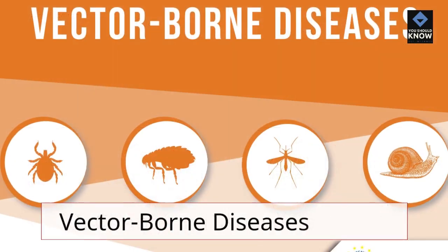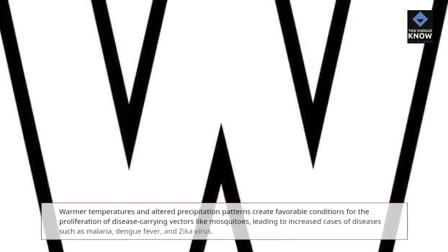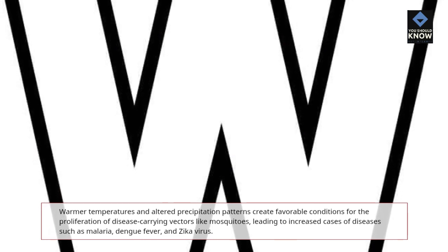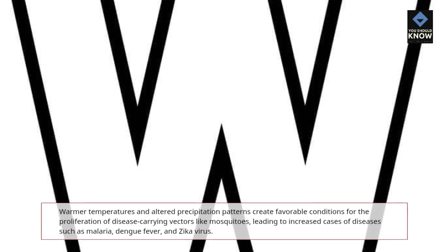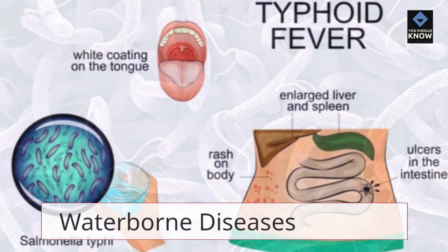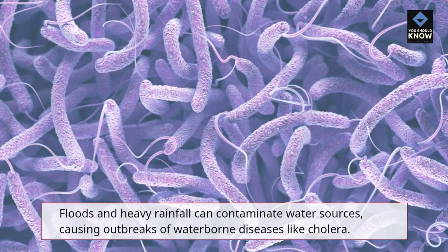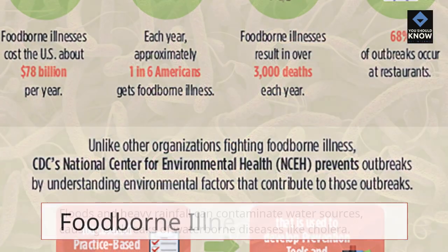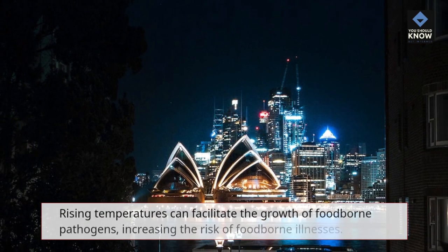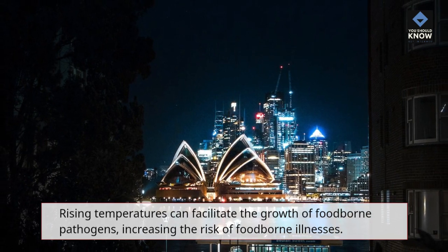Changing disease patterns. Vector-borne diseases: warmer temperatures and altered precipitation patterns create favorable conditions for the proliferation of disease-carrying vectors like mosquitoes, leading to increased cases of diseases such as malaria, dengue fever, and Zika virus. Waterborne diseases: floods and heavy rainfall can contaminate water sources, causing outbreaks of waterborne diseases like cholera. Foodborne illnesses: rising temperatures can facilitate the growth of foodborne pathogens, increasing the risk of foodborne illnesses.